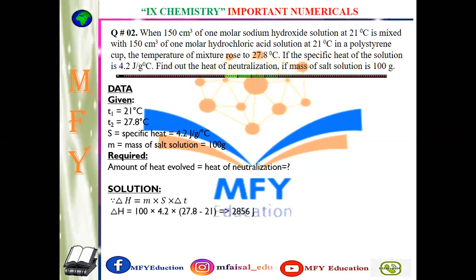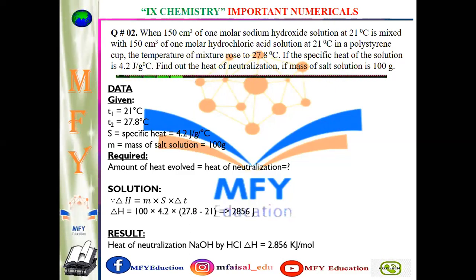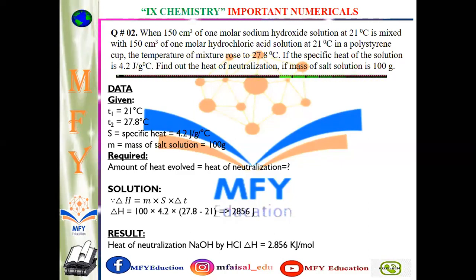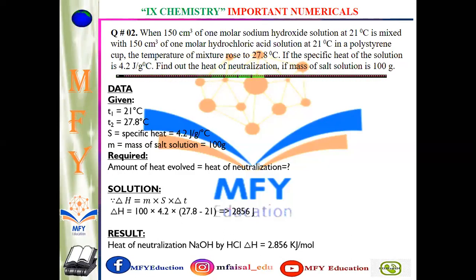Result आ गई — heat of neutralization = 2856 Joules। अगर इसको convert करना है kilojoules में, तो divided by 1000 करेंगे। अगर Joules में answer चाहिए तो 2856, और अगर kilojoules में answer चाहिए तो 1000 से divide कर देंगे।